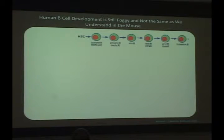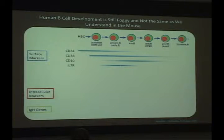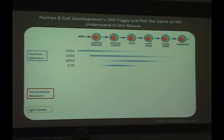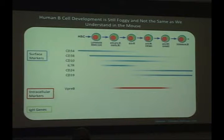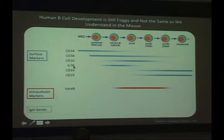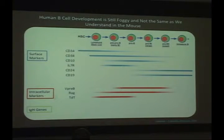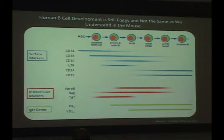If you look at any immunology textbook and focus on the most immature cells, the lines showing where a marker starts and ends are usually faded transitions — you don't really know where things are turning on and off. Key surface markers include CD34, CD38, CD10, the IL-7 receptor (CD127), CD24, and CD19. Intracellularly, you can look for surrogate light chain markers like VpreB, and important enzymes that mediate immunoglobulin recombination like RAG and TDT. Ordering human B-cells ultimately has to do with where they are in rearranging their heavy chain genes: DJ rearrangement and then VDJ rearrangement.